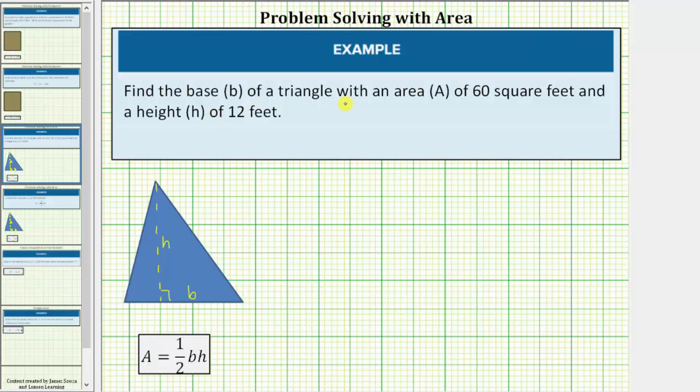We're asked to find the base B of a triangle with an area A of 60 square feet and a height H of 12 feet. To solve this problem we'll be using the area formula for a triangle, which is area equals one-half base times height.